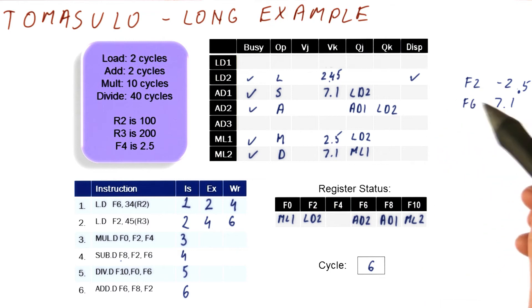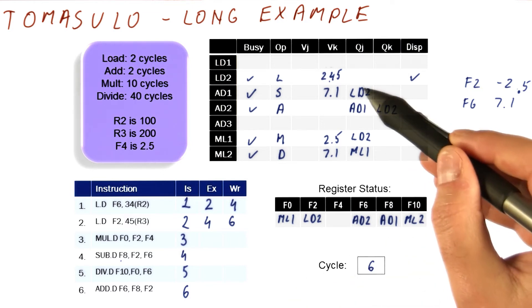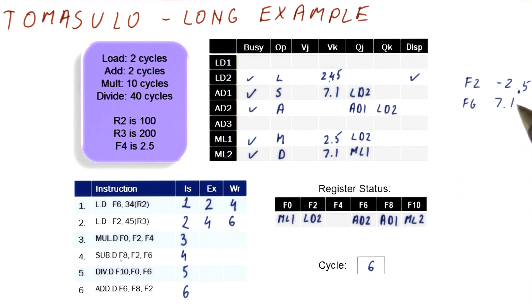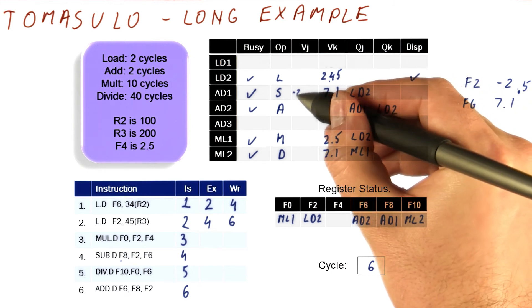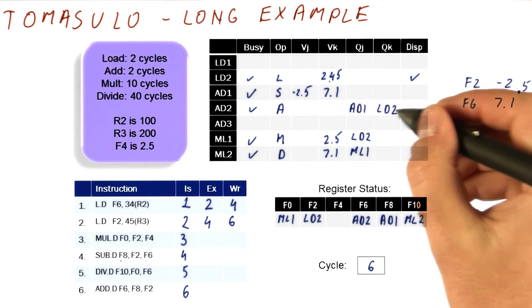We can then provide this value also to all of the things that are waiting for LD2. In this case, there are several instructions. So the operand here matches LD2, so minus 2.5 will be captured here. And we're no longer waiting for it.